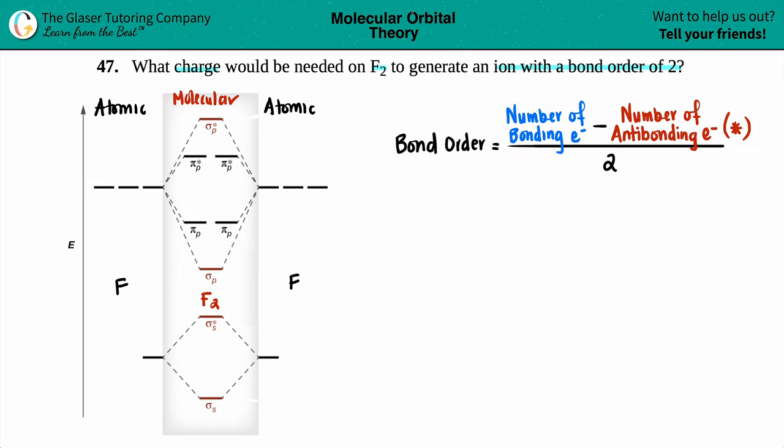You got four antibonding and the other four that have no stars, those are your bonding orbitals. So we know that we have a bond order of two, but we don't specifically know the number of bonding electrons and the number of antibonding, but that's okay. Let's just try to simplify this formula.